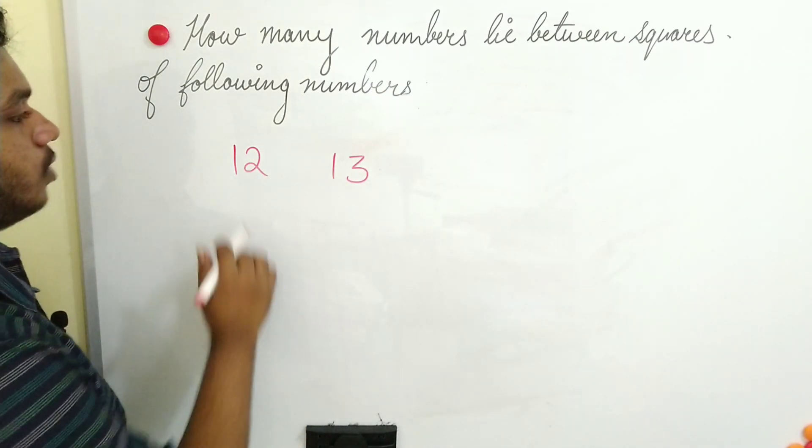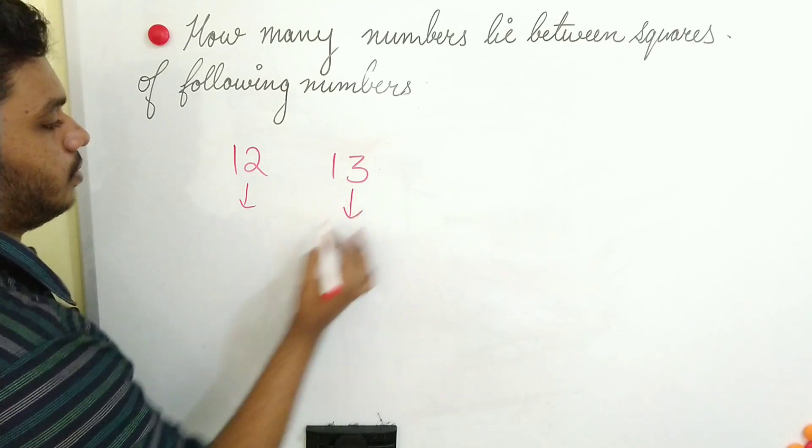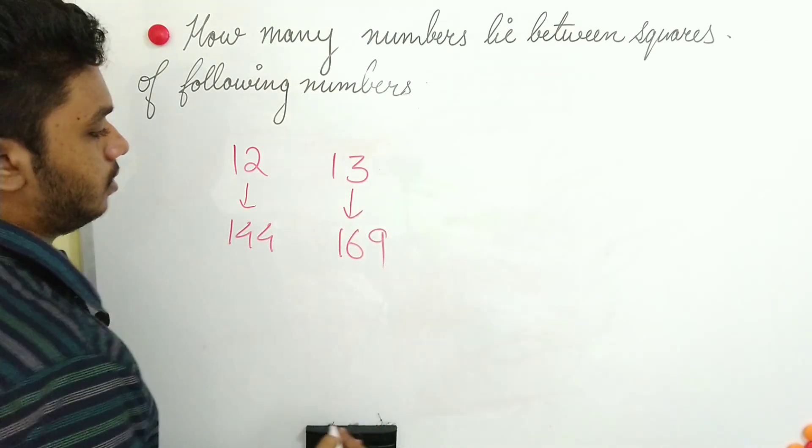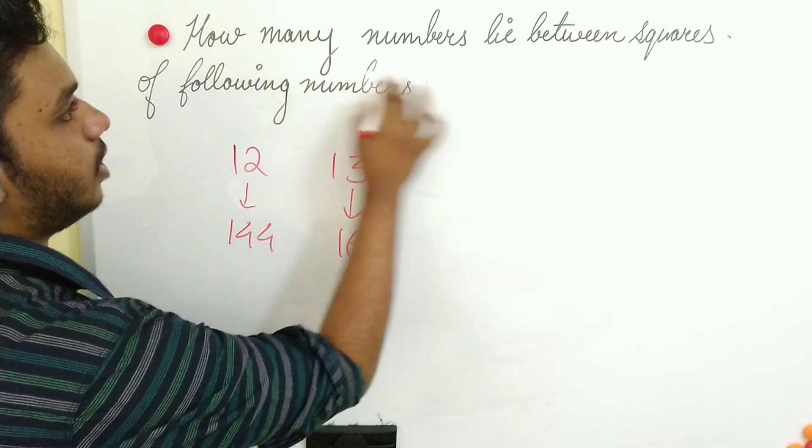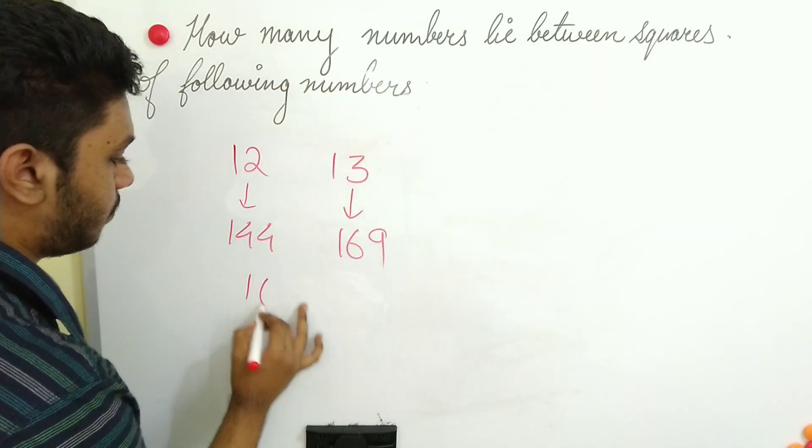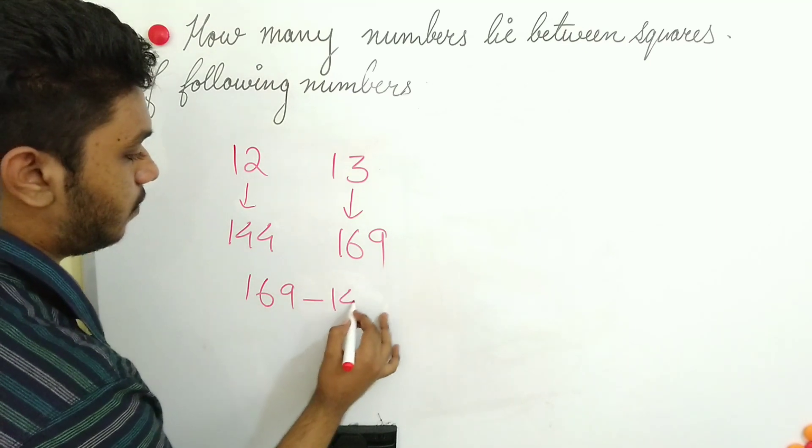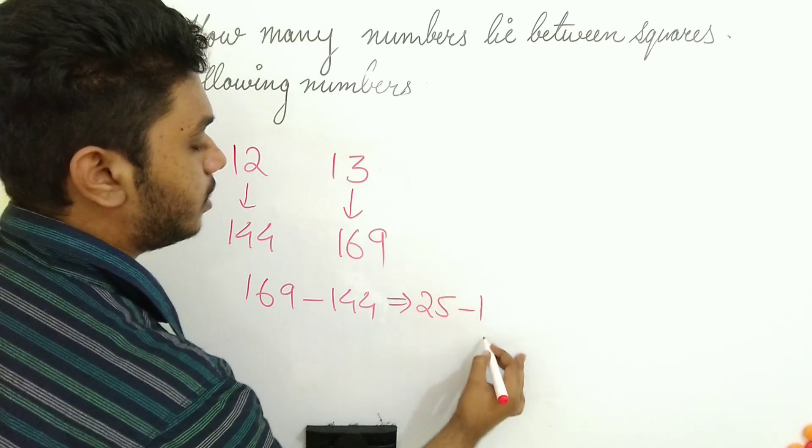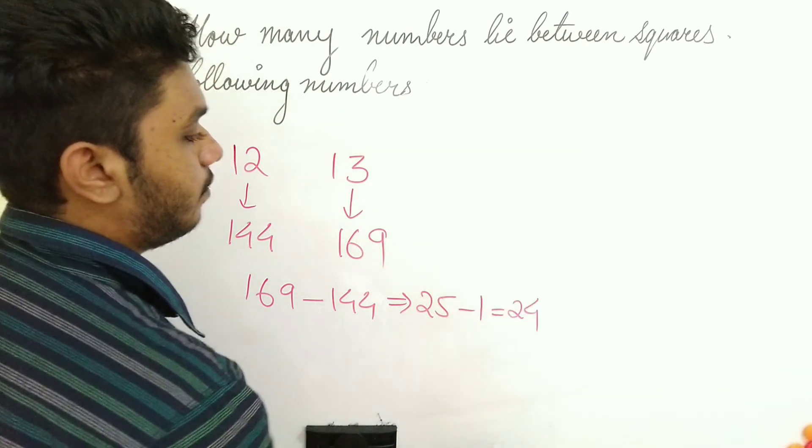These are the two numbers. So I need to first find the square of these two numbers, that is 144 and 169. Then what I should do? I should find how many numbers are lying between these two numbers. I should just subtract 169 minus 144, which will give me the answer as 25. Minus 1 I should do, which is equal to 24.